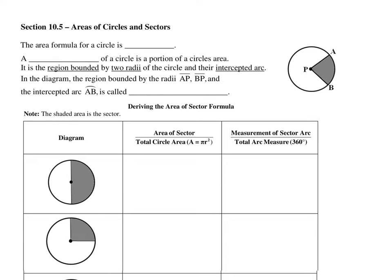Less than ten point five: areas of circles and sectors. The area formula for a circle is pi r squared.